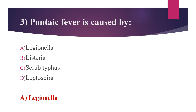Other options: Listeria — listeriosis may be acquired by eating contaminated food and water; in pregnant women, babies can get infection through the placenta. Option C, Scrub typhus, also called bush typhus, is caused by Orientia tsutsugamushi. Option D, Leptospira, which causes leptospirosis, also called Weil's disease, spread through urine of infected animals.